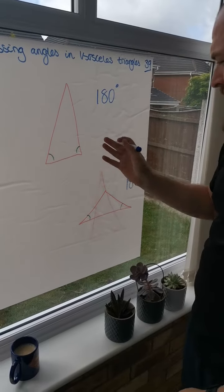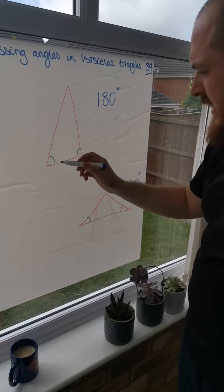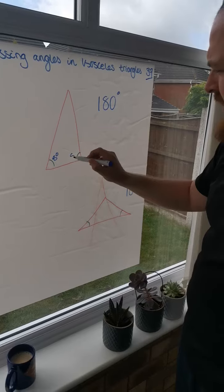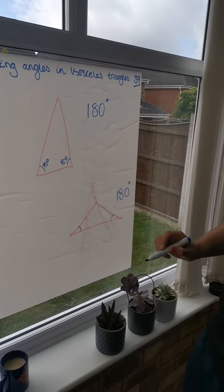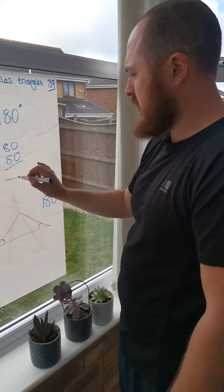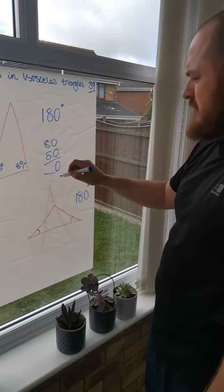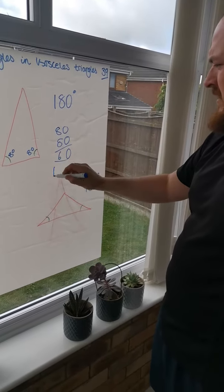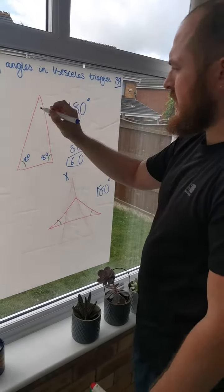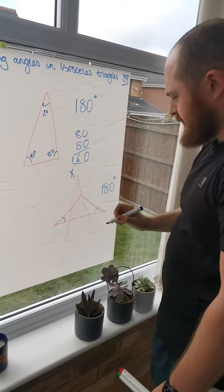So, these two are going to be the same. So, we could say they are 80 and 80. So, 80 add 80. I do my column addition, 8 add 8 is 16. And then from 16 to 180 is another 20 degrees, which would be that.